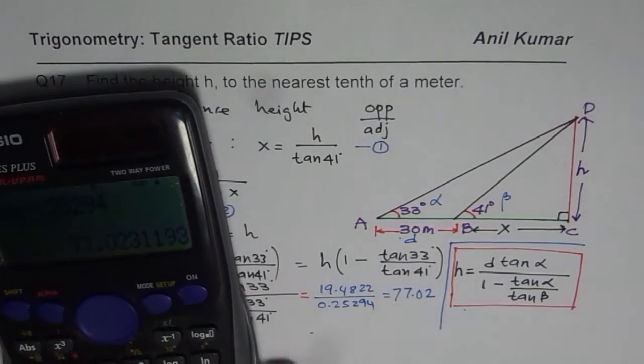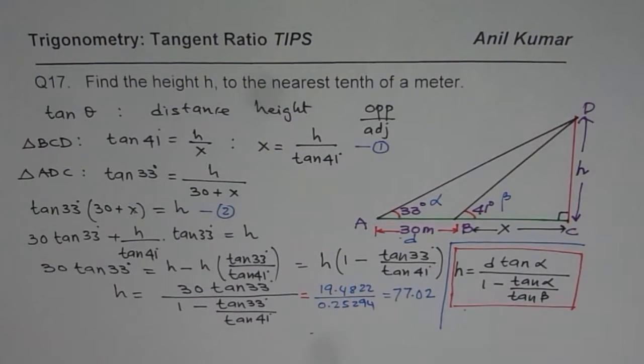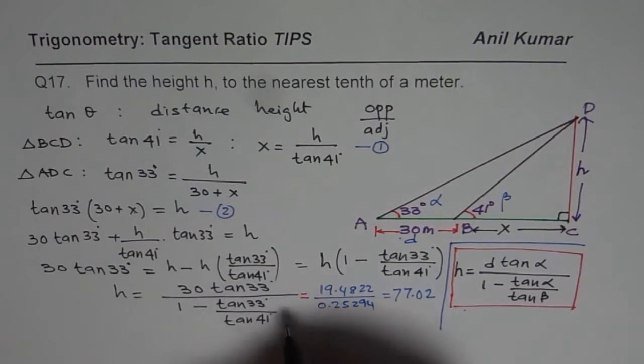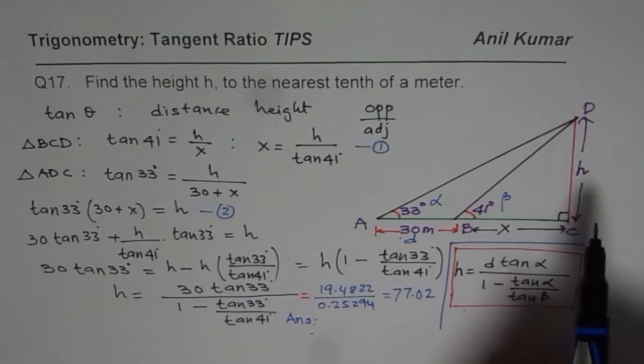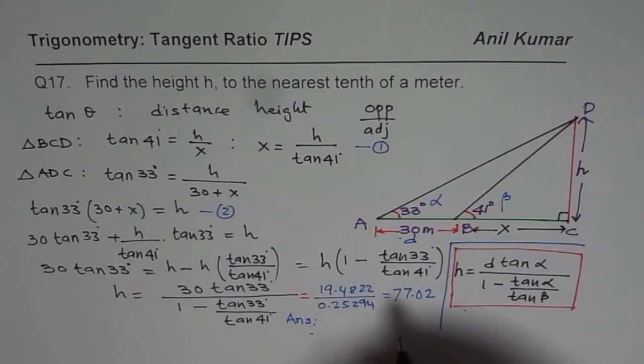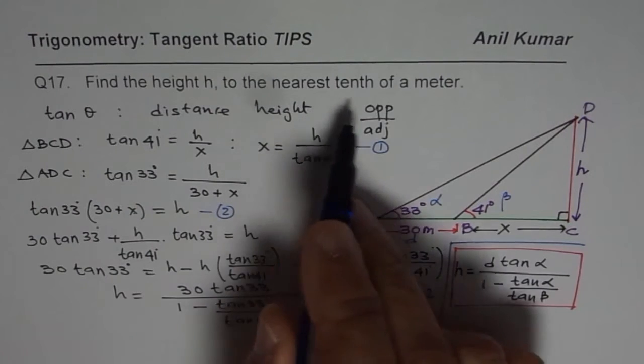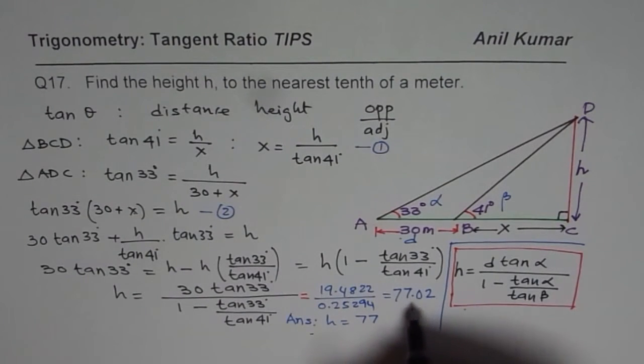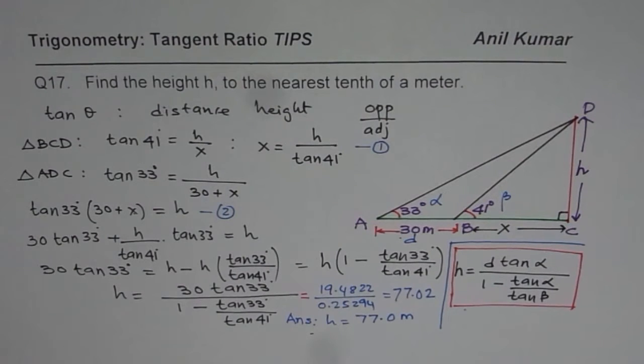So that is the height which we get in this particular situation. We can write down our answer: the height h equals 77.0 meters to the nearest tenth of a meter. That is the height of this particular thing, whatever it is.